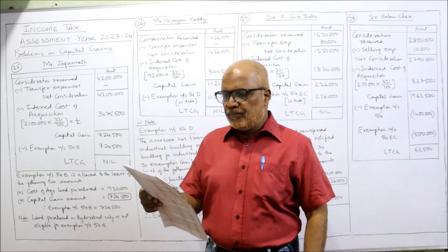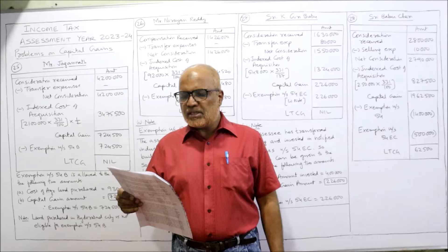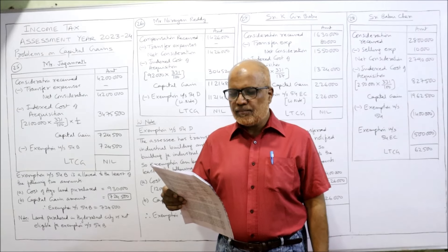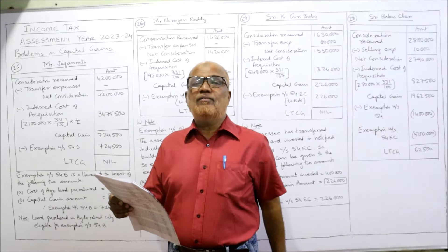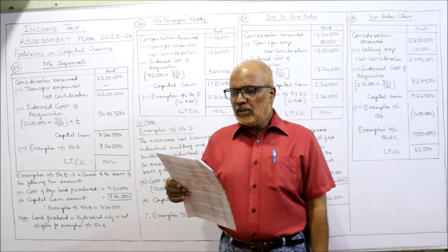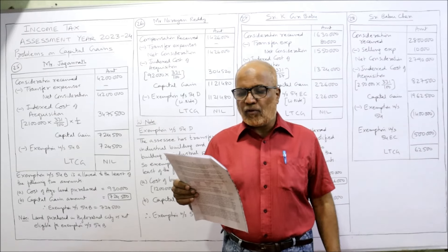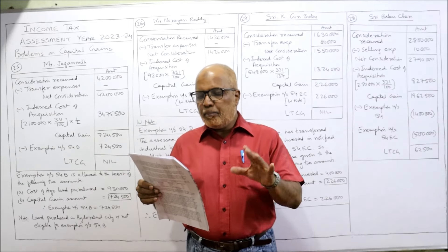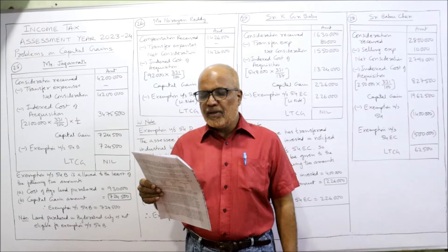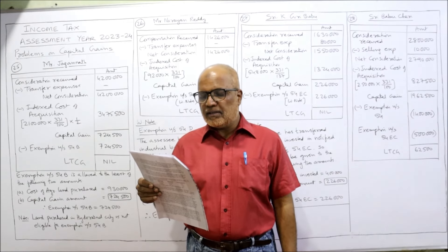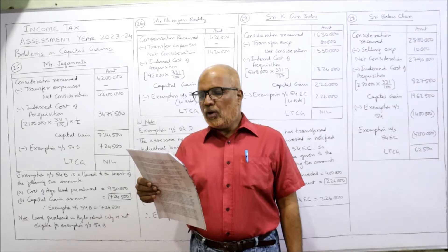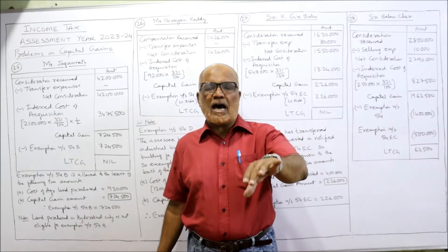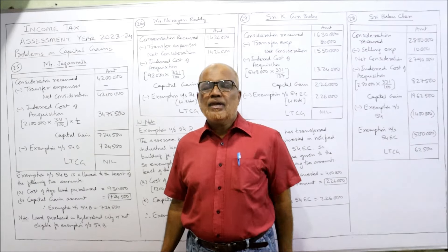Now see the 25th problem. On 1st July 1975, Mr. Jagannath purchased an agricultural land in Karnool for a price of 3 lakh 8,000. This land was purchased in 1975, before 1-4-2001. During the previous year relevant to the current assessment year, he sold half of the property for 42 lakhs and immediately purchased agricultural land for 9,30,000 in a village and a piece of land in Hyderabad city for 9 lakhs. Calculate the taxable income under capital gain if FMV on 1-4-2001 is 21 lakhs.